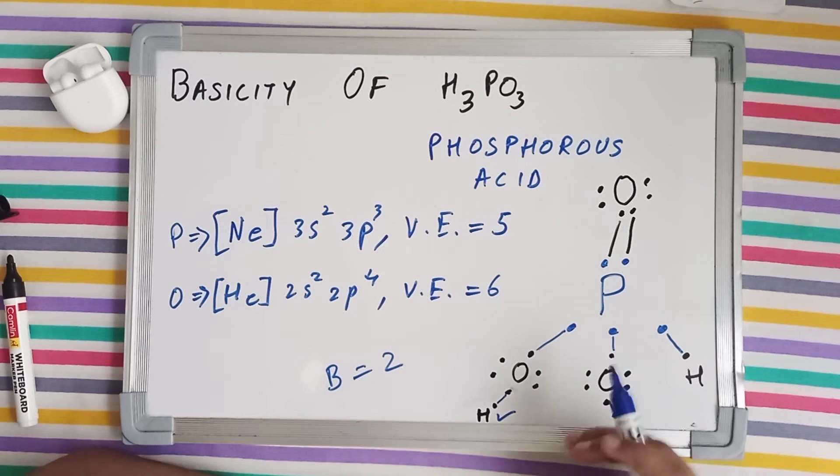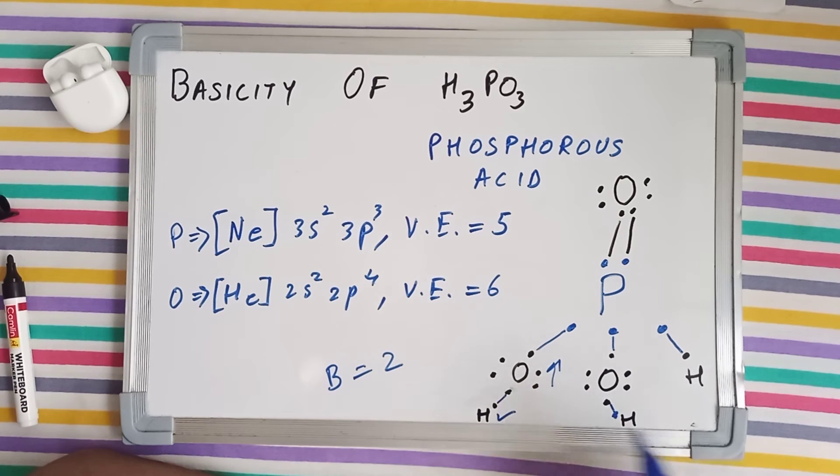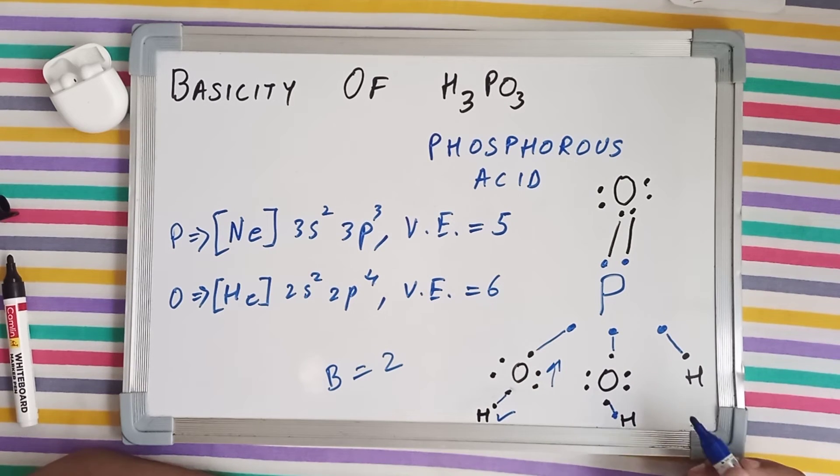Why? Because in order to release H⁺ ions, it must be connected to a highly electronegative atom. In this case here, hydrogen is connected to oxygen, which is a very highly electronegative element. Similarly, this hydrogen is also connected to oxygen, highly electronegative.